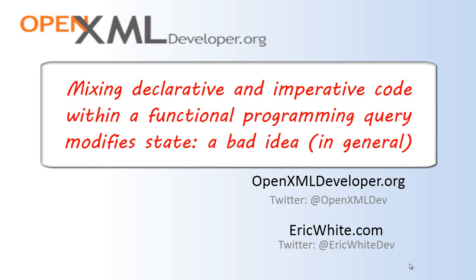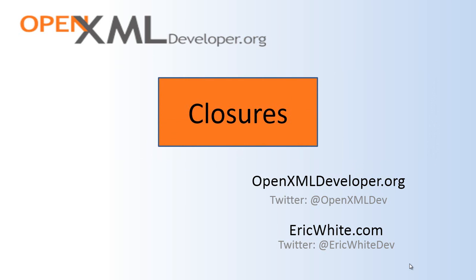And this is, in general, a bad thing. This results in a situation where at certain points in time in a query, or at certain places in the query in certain lambda expressions, you expect a variable to have a certain value. And when you actually run your code, it has a different value due to this problem of mixing imperative code and declarative code and closures. So my key point — that closures make the language work the way you think it should — is true provided that you practice pure functional programming techniques.